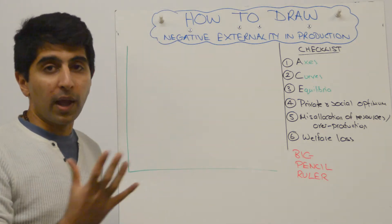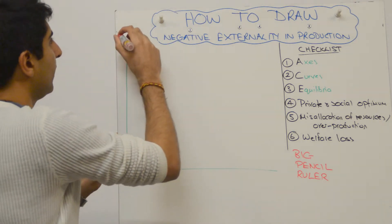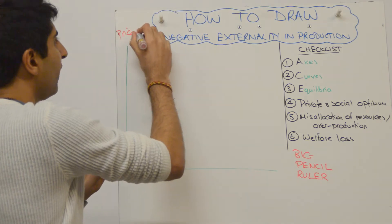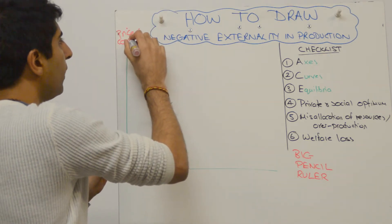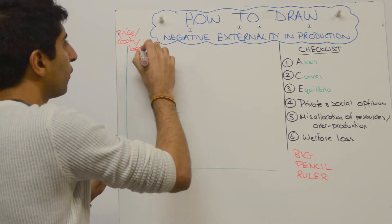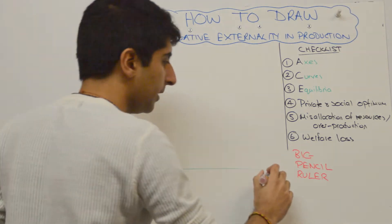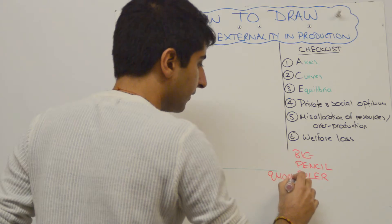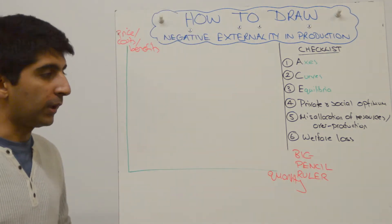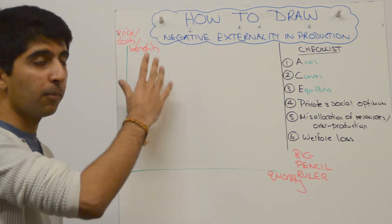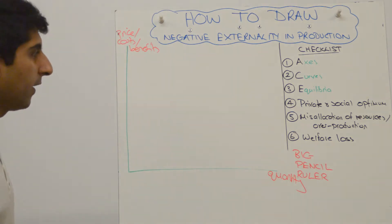Now always we have axis we need to label our curve. For market failure based diagrams you always must label price, costs and benefits on the y-axis. We show all three. And on the x-axis simply quantity. If you know what the market is you can apply it more to that market, but keep it generic here.